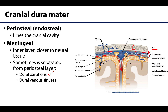In most areas the periosteal and meningeal dura will actually be very closely adhered, but in certain areas they will separate from one another in order to allow deoxygenated blood to flow through those regions. These regions are called the dural venous sinuses — the superior sagittal sinus is one such venous sinus. We will have a whole learning objective video regarding the dural venous sinuses, so more to come on that.